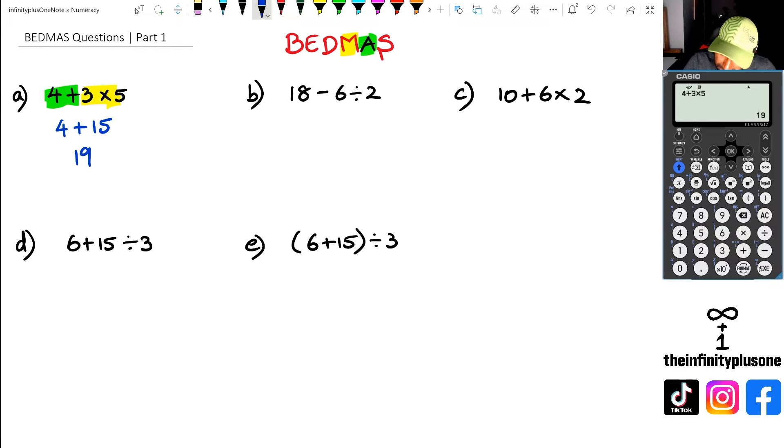Looking at question B, we've actually got division that we need to do first. We're going to do division first, and then after that we are going to do subtraction. So with that in mind, we've got 18 take away 6 divided by 2 is 3. So 18 take away 3 is going to be 15.